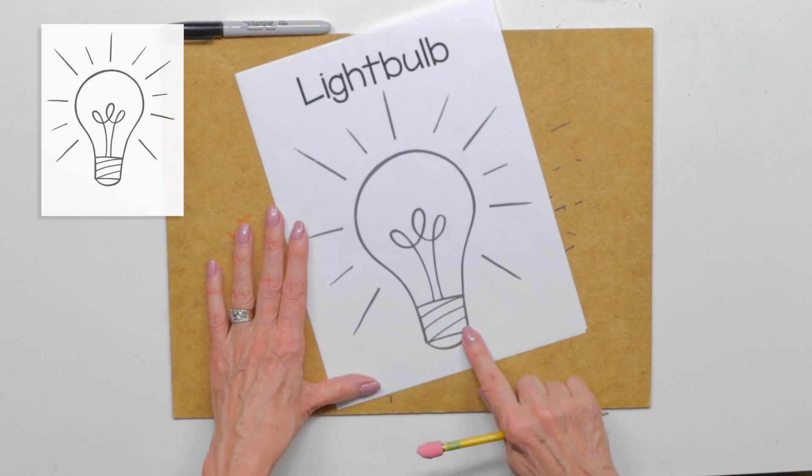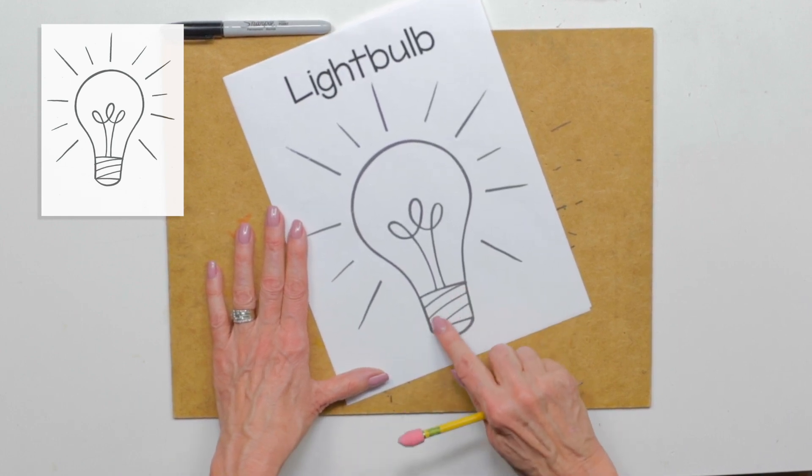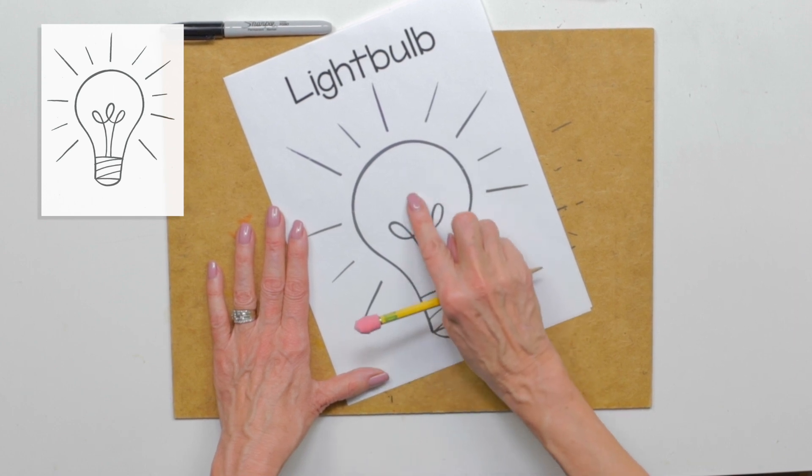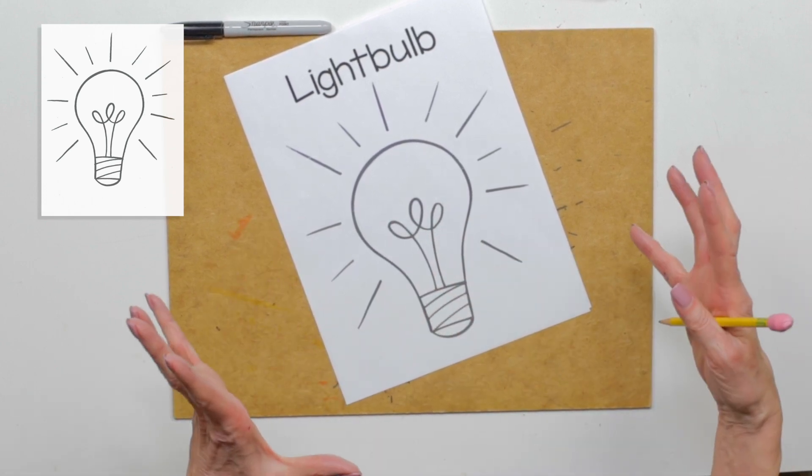Then we're going to curve the bottom, put some threads at the bottom, and we've got that piece inside which starts to glow when you turn the light on.